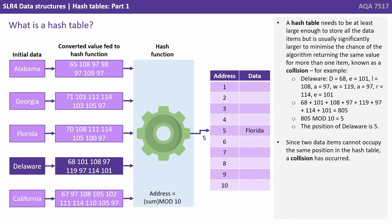A hash table needs to be at least large enough to store all the data items, but it's usually significantly larger to minimize the chance of the algorithm returning the same value for more than one item. This is known as a collision.